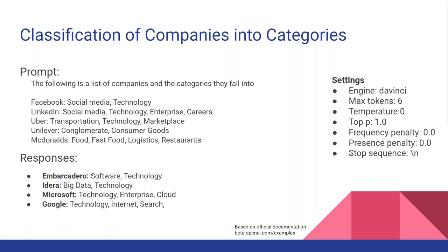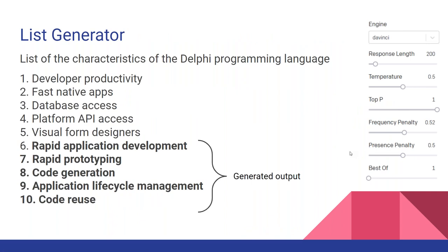There are some settings which I'll get into more details on later that control the way it behaves. This is based on one of the official examples available in the documentation. Here's another one — a list generator. The prompt was 'a list of characteristics of the Delphi programming language.' I provided the first five, and then it provided these next ones. It suggested good application lifecycle management, code reuse, and rapid prototyping. Code reuse is a fantastic one. It's definitely interesting — people are using this as brainstorming tools or to help come up with ideas and bust through writer's block.